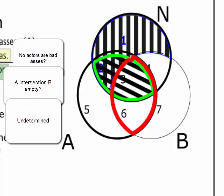No. Although 3 is empty, 6 is blank. It could be empty. But there could also be something there. There could be an actor who is a badass. They just couldn't be a ninja too. So the argument is invalid.